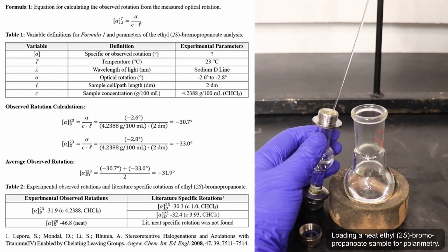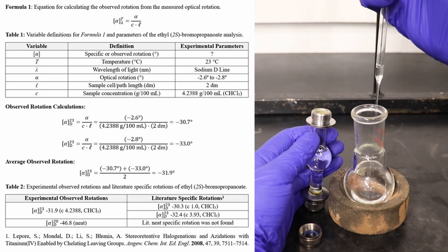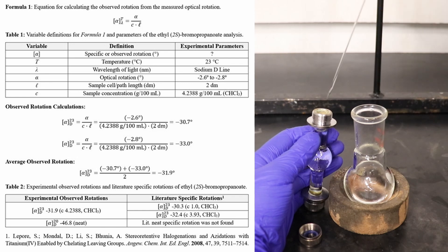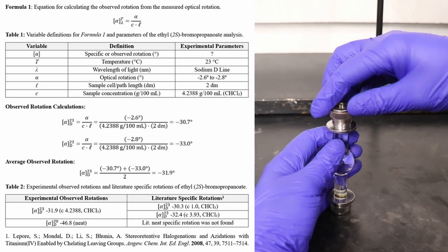This range fits very well to the reported literature specific rotations of negative 30.3 to negative 32.4 degrees, thus showing that I do in fact have an enantiopure sample of ethyl-2-S-bromopropionate.